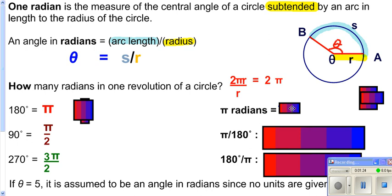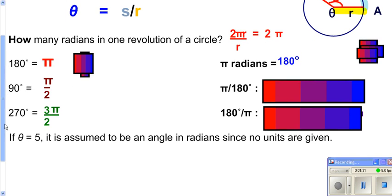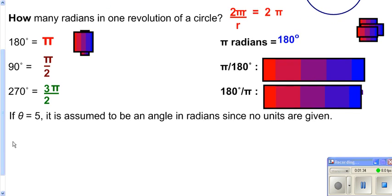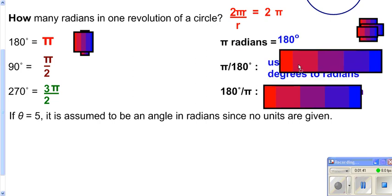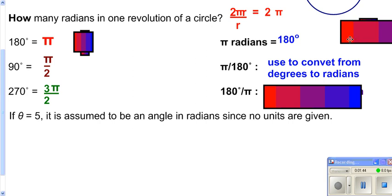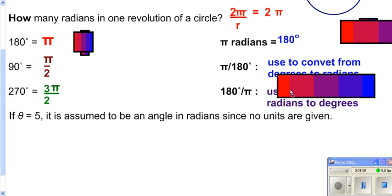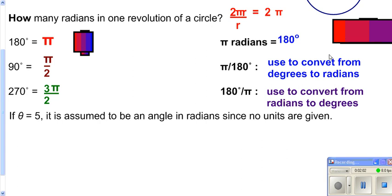So π radians is really equal to 180 degrees. There will be times where you need to convert from radians to degrees or degrees to radians. If you are converting from radians, you want to multiply by π over 180. When you are converting from radians to degrees, you want to use 180 degrees over π, is what you would want to multiply by.